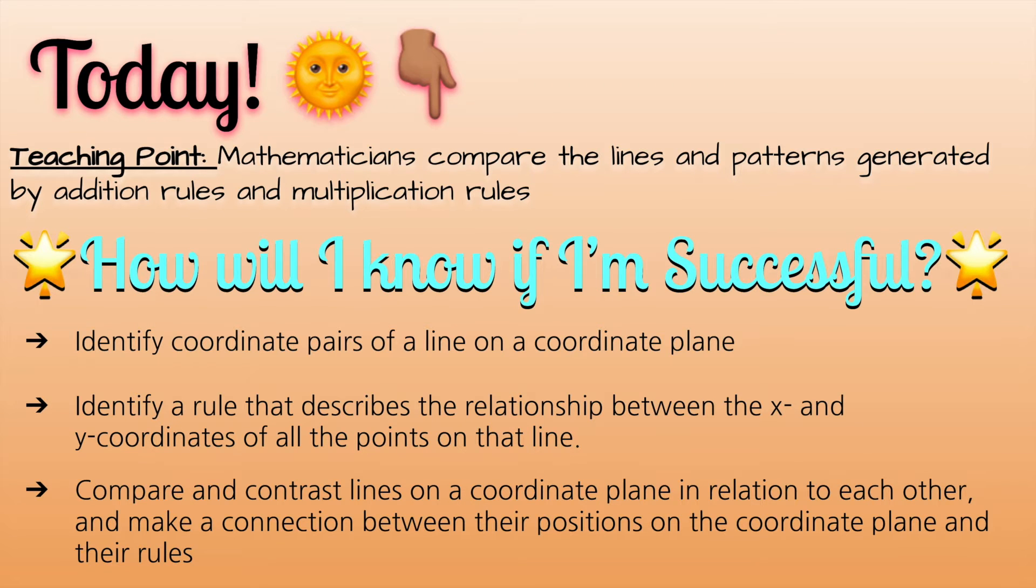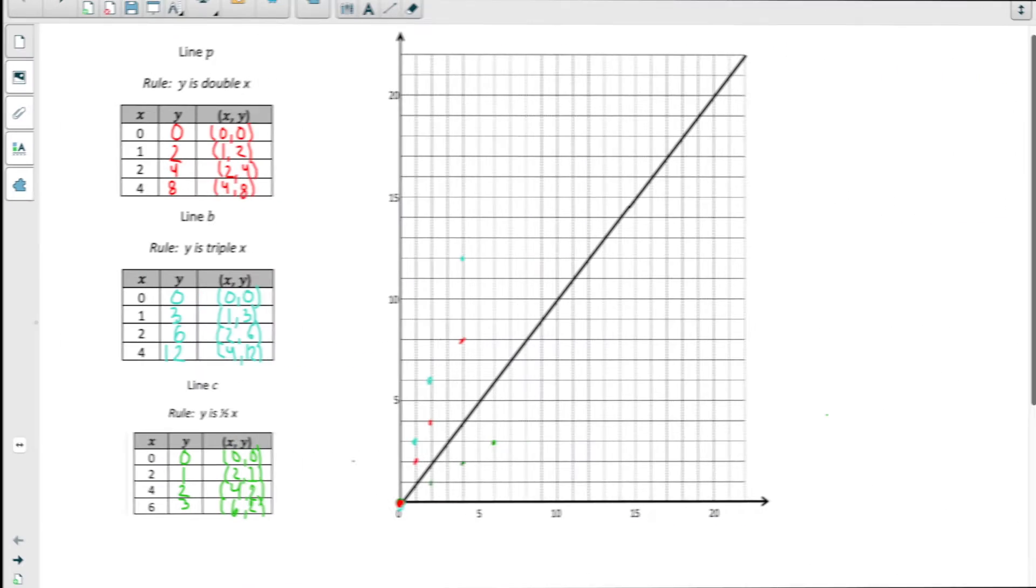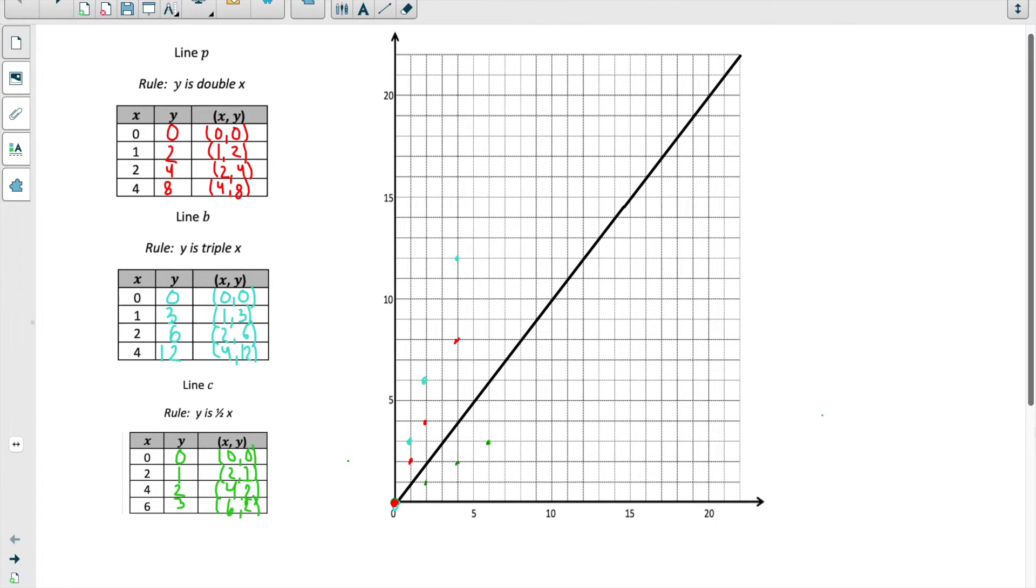And you're going to be able to compare and contrast lines on a coordinate plane in relation to each other and make a connection between their positions on the coordinate plane and their rules. Let's get into it and see what I'm talking about. So today you're not learning a brand new skill, but we really want you noticing patterns in the relationship between a rule and what the line looks like on a coordinate grid.